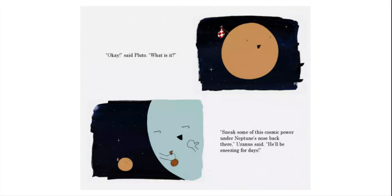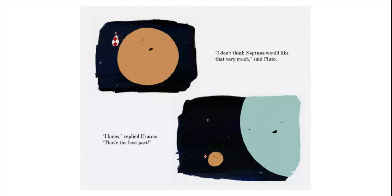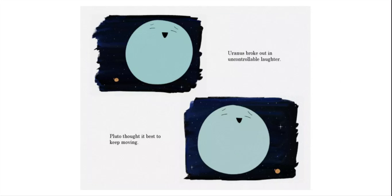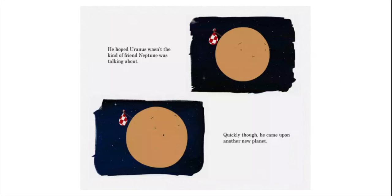Okay, said Pluto. What is it? Sneak some of this cosmic powder under Neptune's nose back there, Uranus said. He'll be sneezing for days. I don't think Neptune would like that very much, said Pluto. I know, replied Uranus. That's the best part. Uranus broke out in uncontrollable laughter. Pluto thought it best to keep moving. He hoped Uranus wasn't the kind of friend Neptune was talking about. Quickly, though, he came upon another new planet.